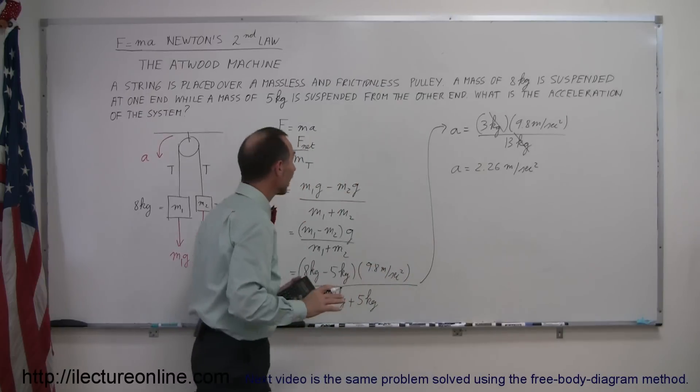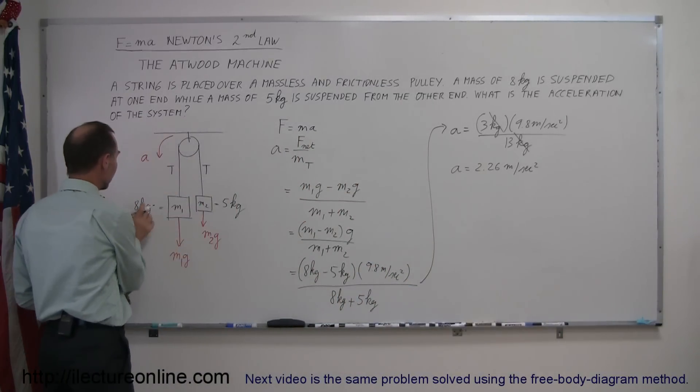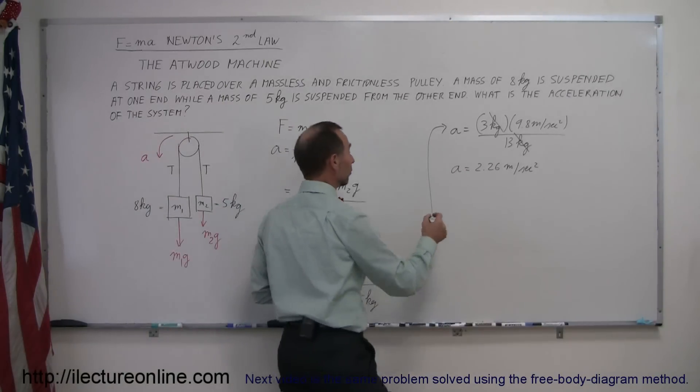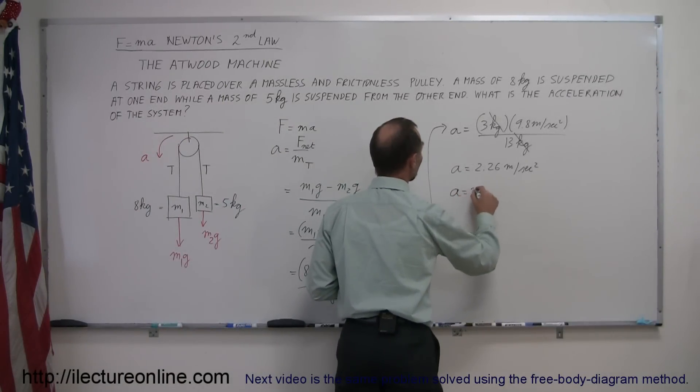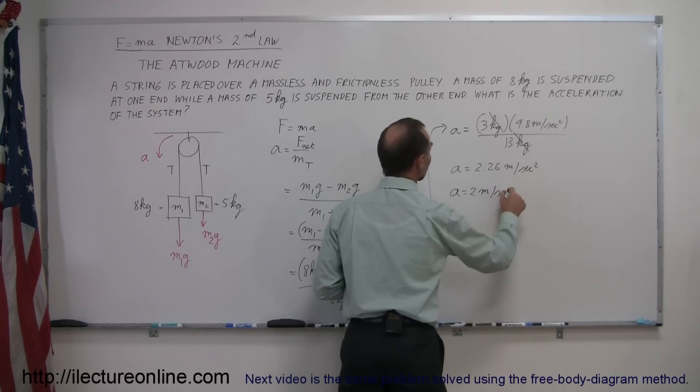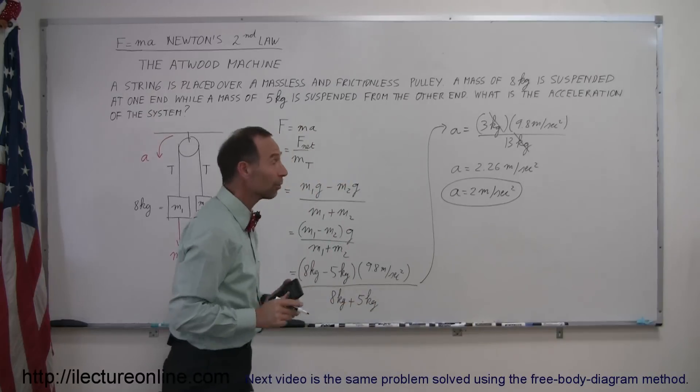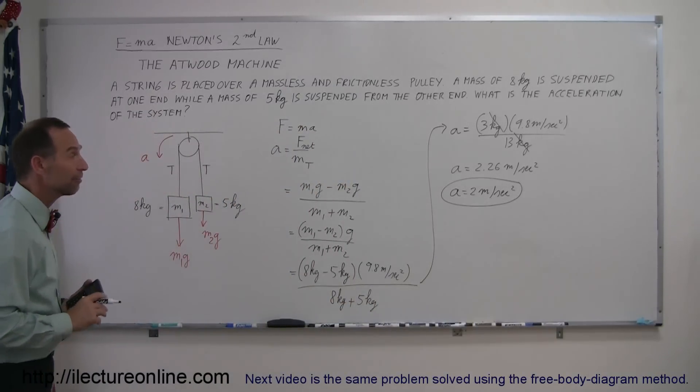So acceleration is equal to 2.26 meters per second squared. However, notice that you were given the masses to just one significant figure, which means your answer should only have one significant figure. So we really should write this as a is equal to 2 meters per second squared, to match the significant figures of our original problem. That's how you find that.